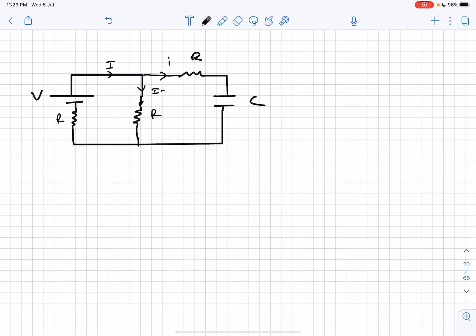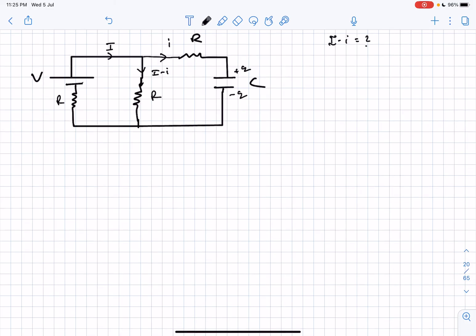The current here will be capital I minus small i. We need to find capital I minus small i. Let's take this particular loop and write the KVL equation.